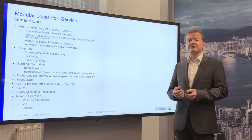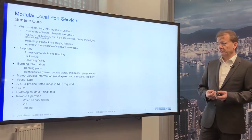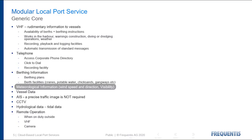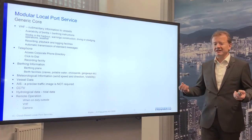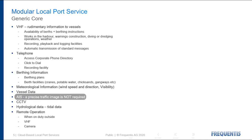We need to implement telephone access, a corporate phone directory, support for click-to-dial functionality, and certainly recording facility again. We might need berthing information to provide berthing plans, to offer berth services like cranes and potable water. We need to implement meteorological sensors to provide meteorological information, have something like a vessel database to access all vessel data, and implement an AIS base station to maintain an ongoing traffic image.